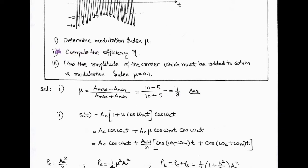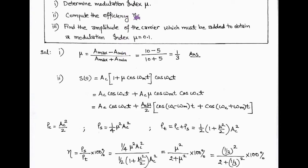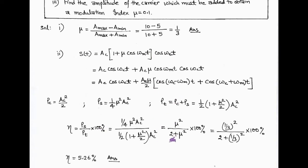Now we move to the second part, where we have to determine the efficiency eta. The efficiency eta is sideband power upon total power into 100%. Similar to our last problem, efficiency eta equals mu squared upon (2 plus mu squared) into 100%. In place of mu, we write 1/3 and the result is 5.26%.